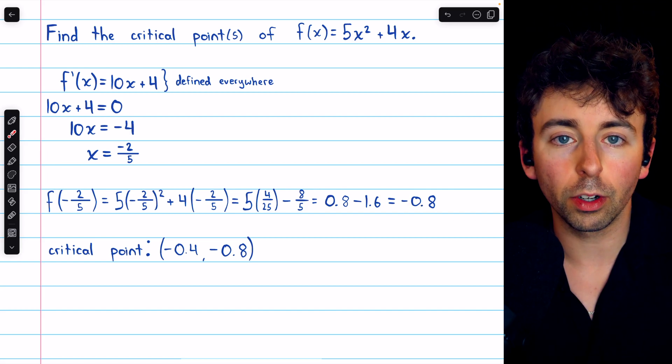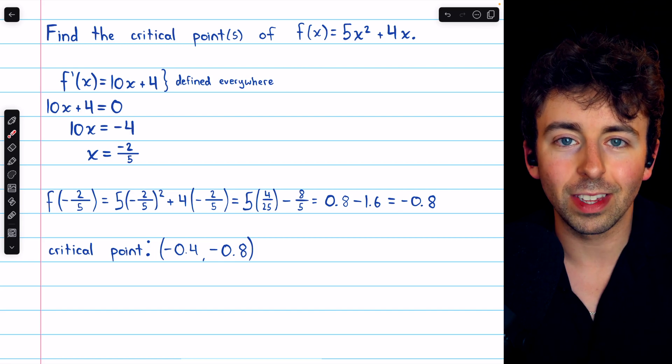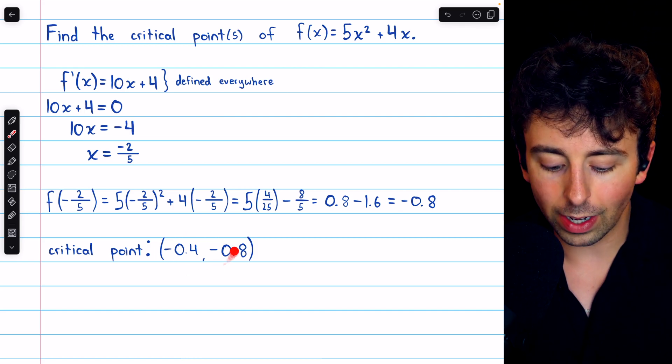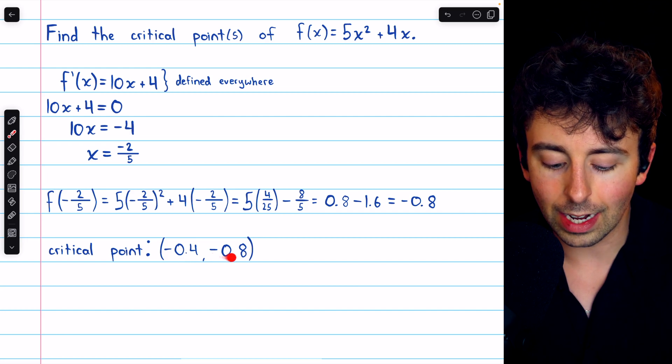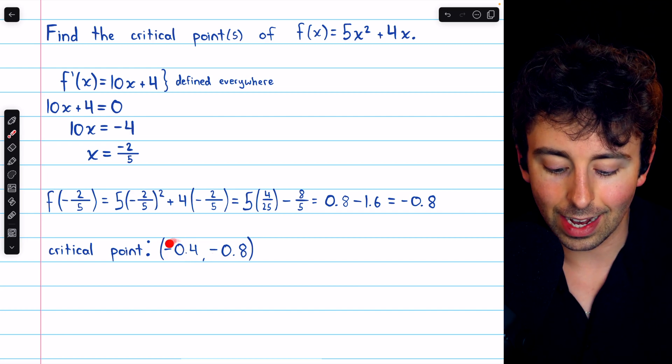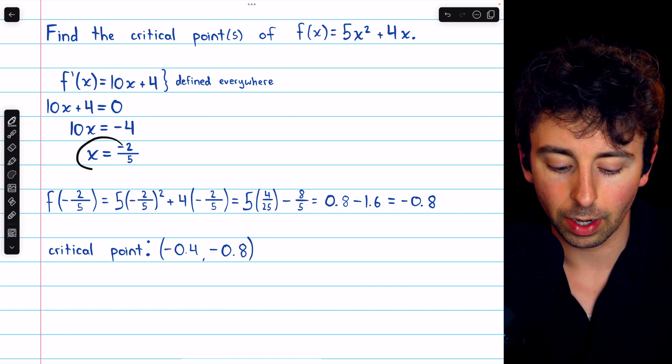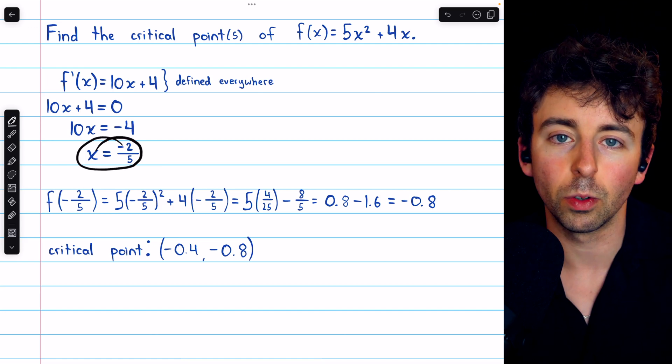Thus, the one critical point of this function, where the derivative is equal to 0, is this point here, (-0.4, -0.8). That -0.4, remember, is coming from that x coordinate, -2/5.